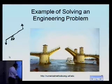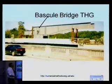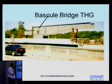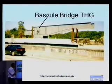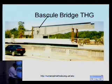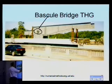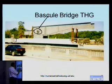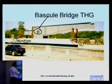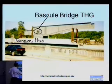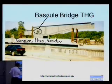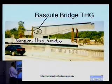This is a bascule bridge over our own Hillsborough County river bridge in Tampa, Florida, shown during construction. The fulcrum is the THG assembly — Trunnion, Hub, and Girder. T is the trunnion, H stands for hub, and G stands for the girder. The trunnion, hub, and girder assembly together make the fulcrum of the bridge.